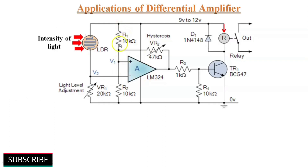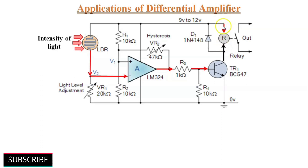In this circuit, a fixed reference voltage V1 is applied to the non-inverting input through an R1 and R2 voltage divider network, while the inverting terminal is connected to a light dependent resistor. As the intensity of light changes, the resistance value of the LDR changes, so input voltage V2 also varies. This produces an output voltage from LM324 which turns on transistor TR1, energizing the relay coil and turning on the relay.